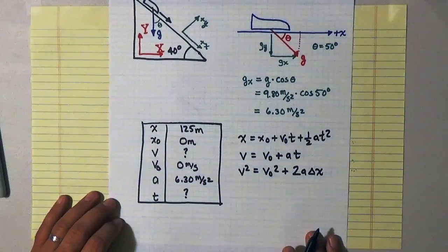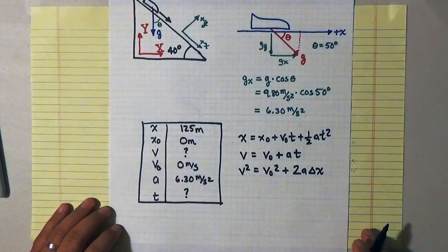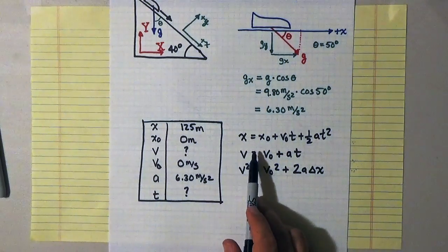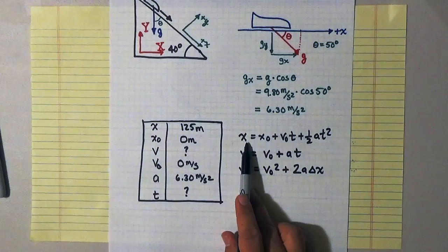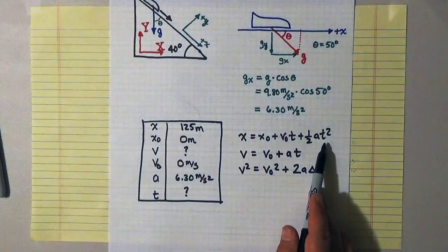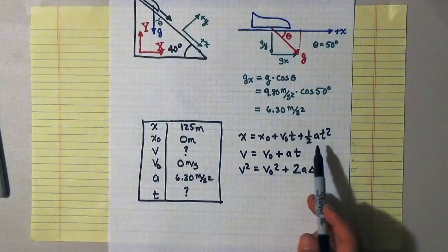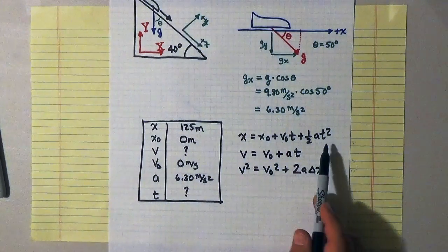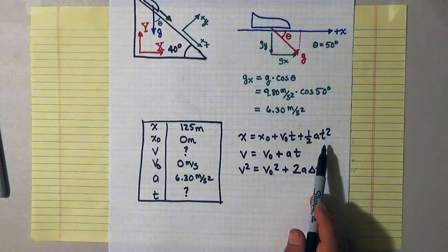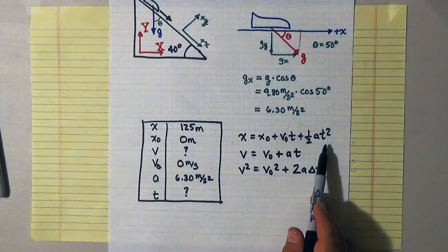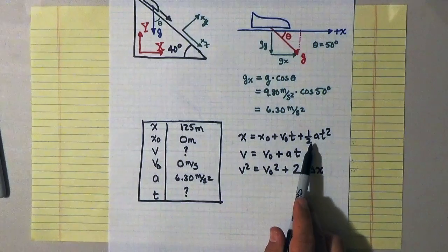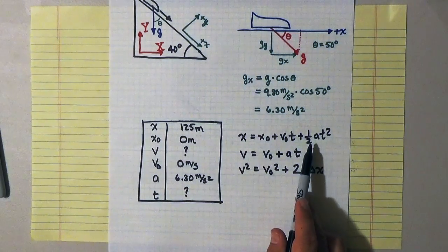Now, I could do this problem any number of ways. I could go ahead and solve for time. So if I wanted to solve for time, this is the optimal equation to do it because I know everything in this equation except for time. Now, the problem with using this equation, and one of the reasons that I often avoid it, is because you have to solve a quadratic equation to do it. But in this case, we don't actually have to solve the quadratic equation because my initial speed is 0. And so this becomes a very straightforward equation to use.